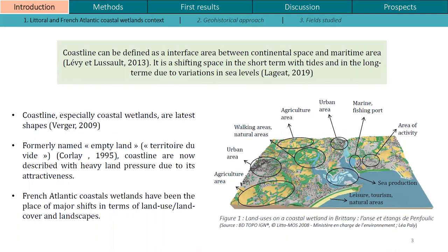This research focuses on coastline areas, and more specifically on coastal wetlands. Coastline can be defined as an interface area between continental space and maritime area. It is also a shifting area in the short term, with tides, and in the long term, due to variation in sea levels. Coastal wetlands are recent shapes, formed during the latest transgression during the Holocene, named Transgression Flandrien.